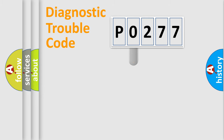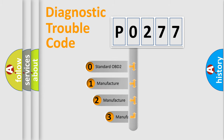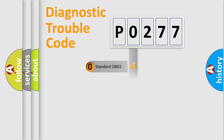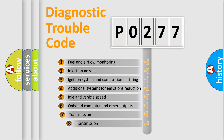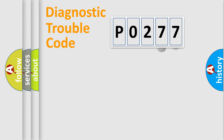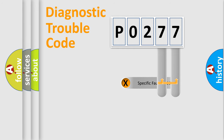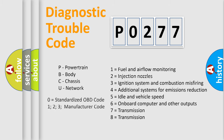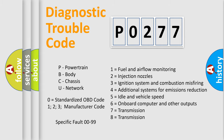This distribution is defined in the first character of the code. If the second character is expressed as zero, it is a standardized error. In the case of numbers 1, 2, or 3, it is a manufacturer-specific error. The third character specifies a subset of errors. This distribution is valid only for the standardized DTC code, and only the last two characters define the specific fault of the group.